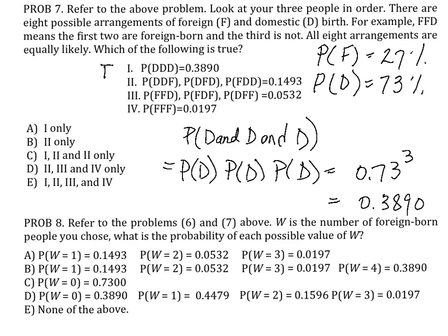For the next group, using the same logic, this time we're going to multiply, using the multiplication rule, two domestic-born probabilities by the foreign-born probability. So it's going to look like 0.73 to the power of 2 times 0.27. And when you punch that in, you get the answer 0.1493.